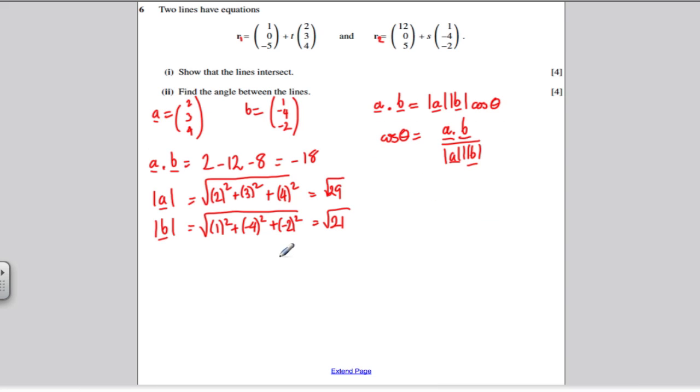So plug it into this formula here. Therefore, the cosine of the angle between the two is A dot B, which is minus 18, divided by the square root of 29, multiplied by the square root of 21. So type this in the calculator.